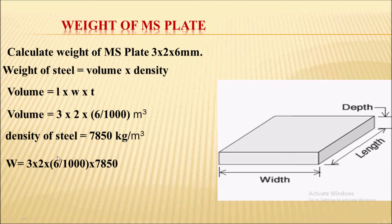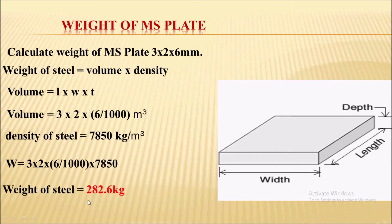We know the density of steel is 7850 kg per meter cube. So the weight equals volume into density. Substituting the volume formula and the density of steel, we get the result: weight of steel = 282.6 kg. This is for the mild steel plate.